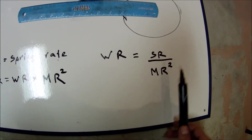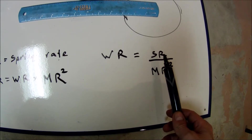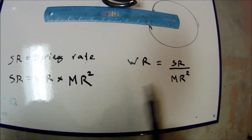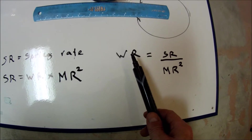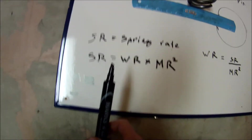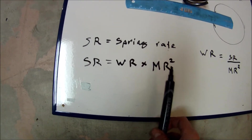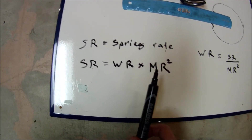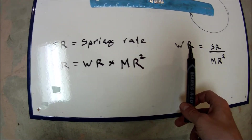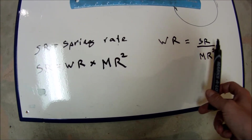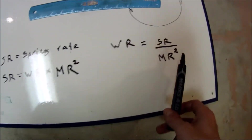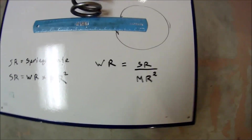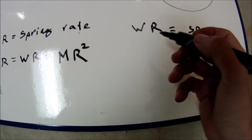So if you know the wheel rate and the motion ratio, you can find the spring rate. If you know the spring rate and the motion ratio, you can find the wheel rate. If you don't know the motion ratio but you know the wheel rate and spring rate, you can find the motion ratio.